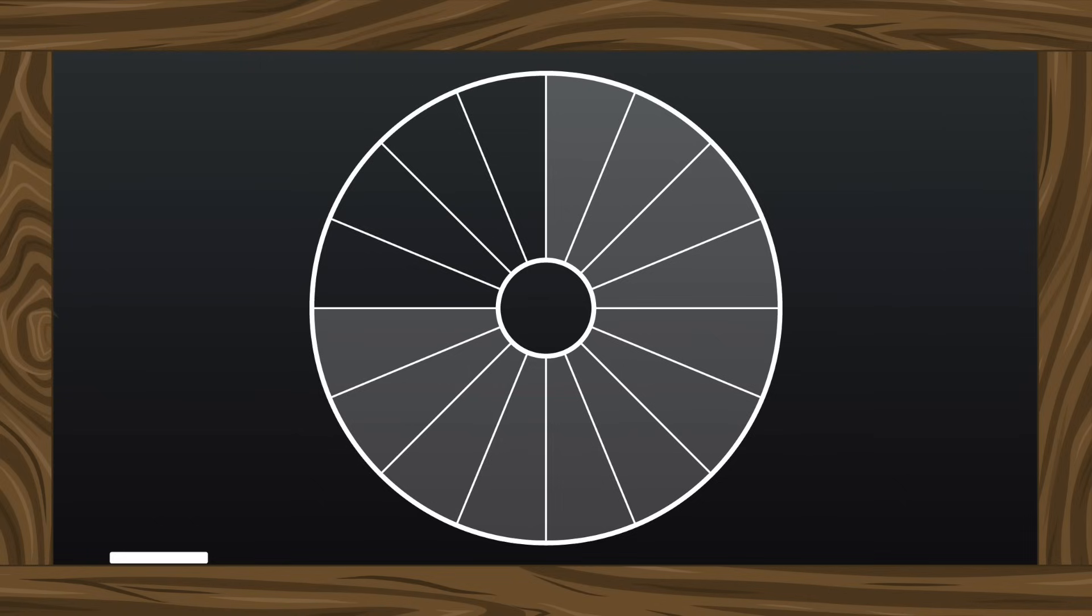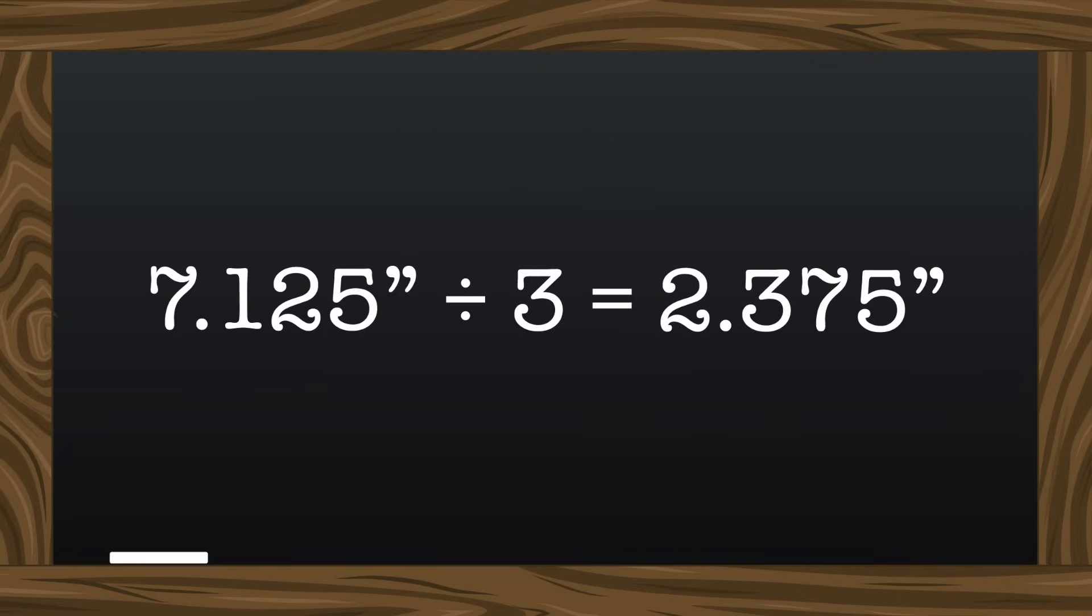To pattern a quarter of the skirt, you will be using 3/16ths of a circle, and you need that inner curve to equal 7.125 inches. So how we find the circumference of our theoretical full circle is by taking 7.125 and dividing it by 3 to find 1/16th,